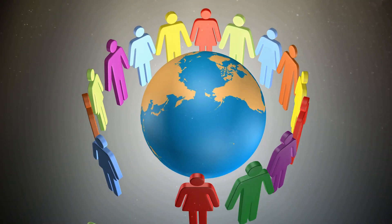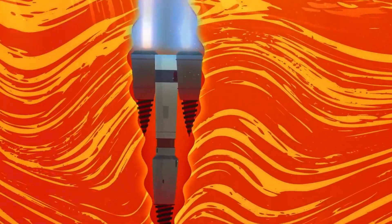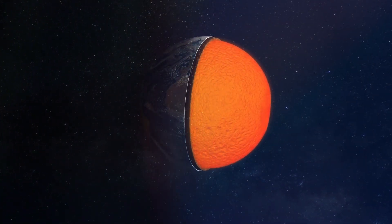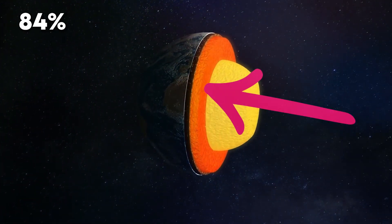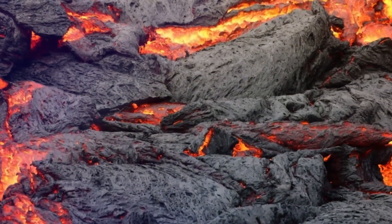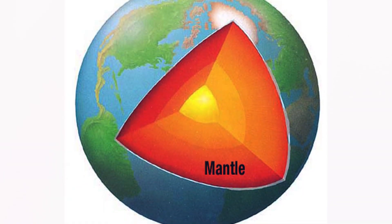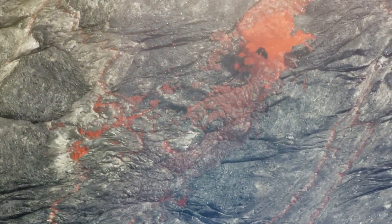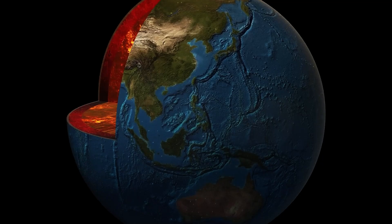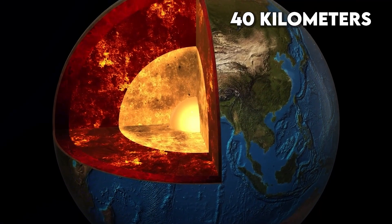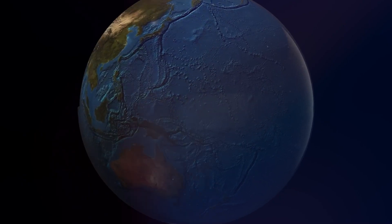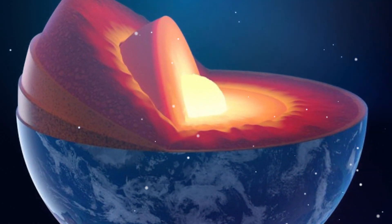Right beneath the crust, things get a bit more interesting. We hit the mantle, a thicker layer that makes up a whopping 84% of Earth's volume. This layer is not molten lava, but still pretty hot and fluid, making it more like a slow, gooey flow. This chunky middle layer goes down deep, extending from about 40 kilometers to a whopping 2,900 kilometers below the Earth's surface.